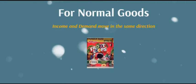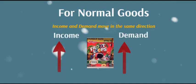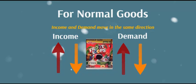For normal goods, income and demand move in the same direction. At higher income, demand would rise, because buyers can afford more of the nicer items. But as their income falls, demand for these items also falls — you might have to say goodbye to the Fruit Loops.